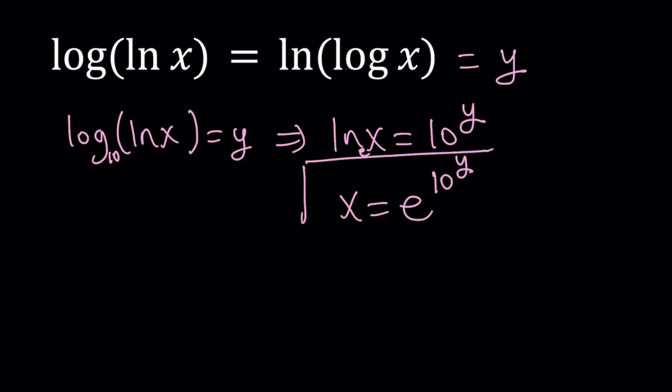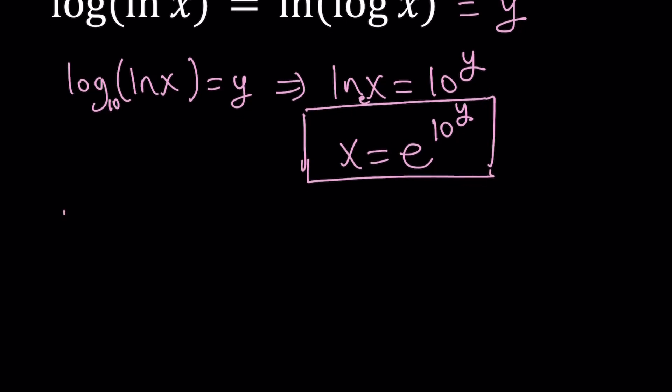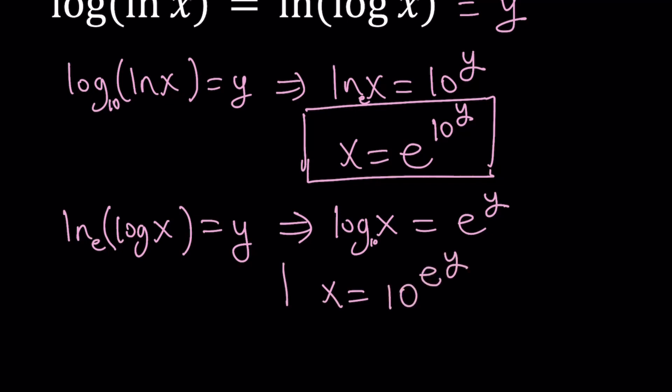So this is our first step, and then the second thing we're going to do is use the second equation. We have ln log x equals y. And by using something similar, the base is e this time on the outside, so we can say that log x is equal to e to the power y. And since the base is 10 here, from here we get x equals 10 to the power e to the power y.